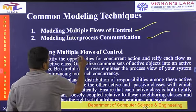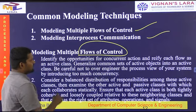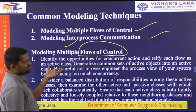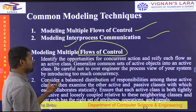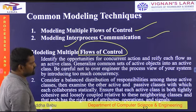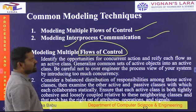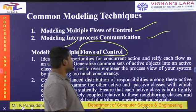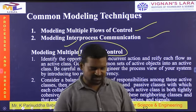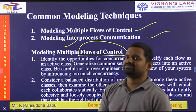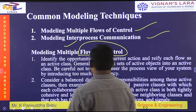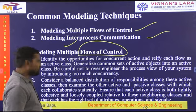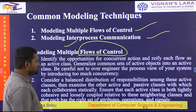Identify the opportunities while managing flow of control — flow of control representing single or multiple flow. Identify the opportunities for concurrent action and model each flow as an active class. Generalize a common set of active classes. Be careful not to over-engineer the process view by introducing too much concurrency. Use only those active object flows that are available in the particular system.